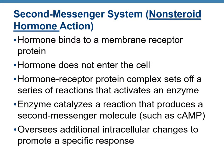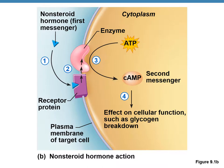The non-steroidal hormone (shown with a blue triangle) does not diffuse inside the cell. Instead, it binds to a receptor protein on the plasma membrane, forming a hormone-receptor complex. This triggers a series of chemical reactions and activates a particular enzyme (shown in pink). The enzyme catalyzes a reaction that produces a second messenger molecule known as cAMP, or cyclic AMP. cAMP has important effects on cellular functions such as glycogen breakdown.